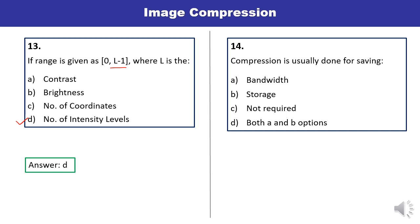Question 14: Compression is usually done for saving of what — bandwidth, storage, compression not required, or both bandwidth and storage? Compression is done for saving of bandwidth as well as storage. Let us mark D as the correct answer.